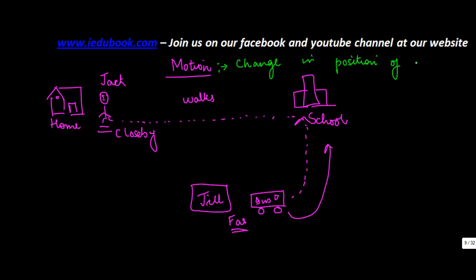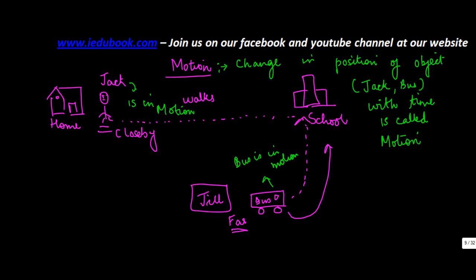of object. Now this object can be Jack or it can be the bus. With time, this is called motion. It is said that Jack is in motion or the bus is in motion. So motion is basically change in position.